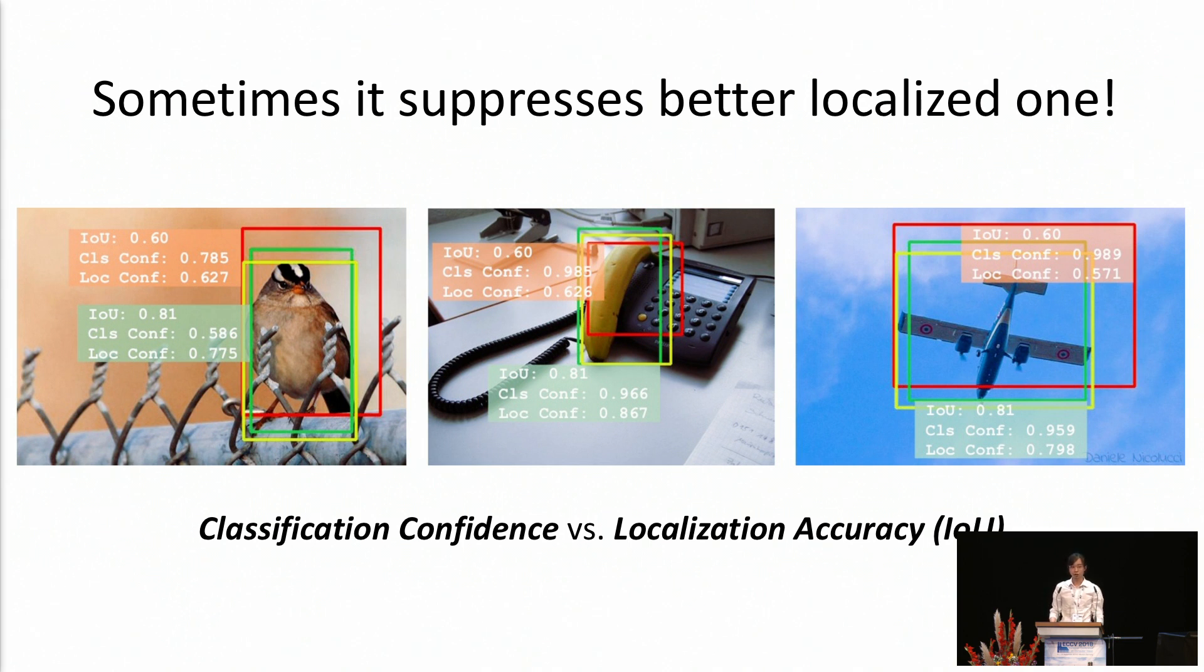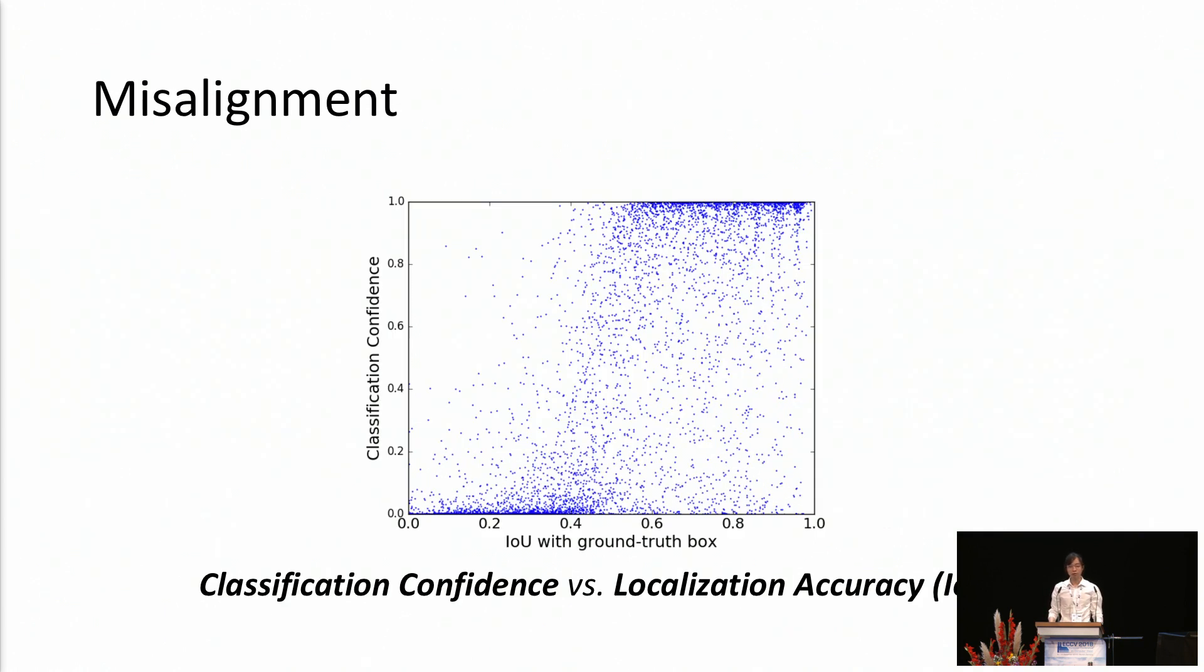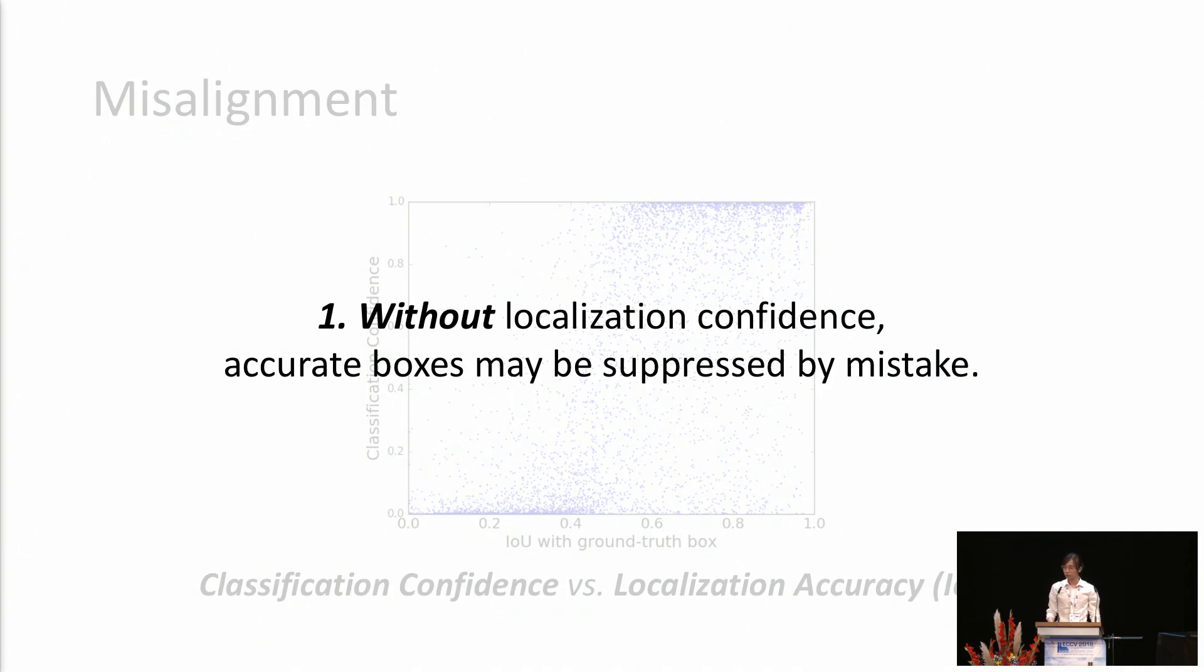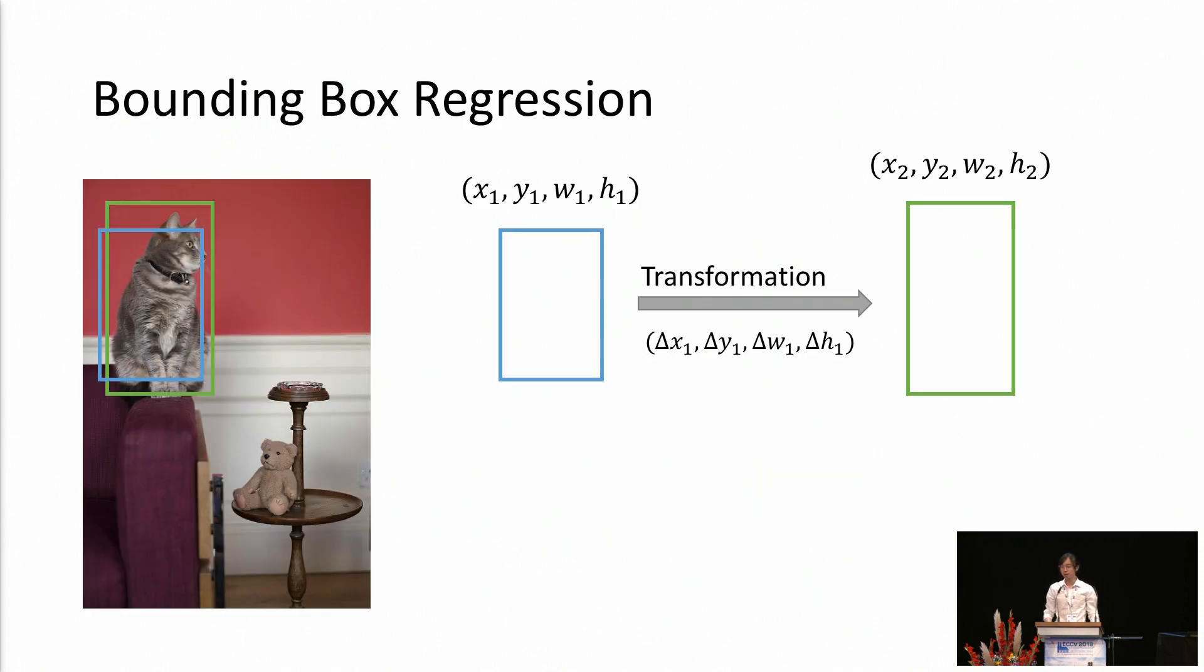we may find that this algorithm sometimes suppresses better localized ones. We show the ground truth in yellow and we find that the green boxes, which are better localized than the red ones, actually have a lower classification confidence. To better demonstrate this misalignment, we plot this figure. On the x-axis, we show the IOU with the ground truth of all detected bounding boxes. And on the y-axis, we show their classification confidence. We can see the misalignment between these two factors. We know that the Pearson correlation coefficient for this figure is only around 0.2. We argue that without the localization confidence due to the NMS procedure, accurate boxes may be suppressed by mistake.